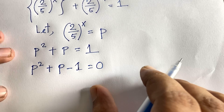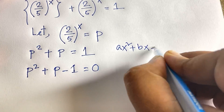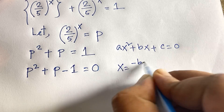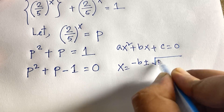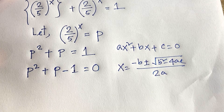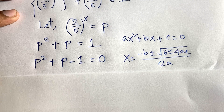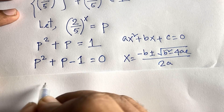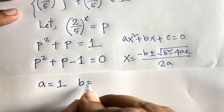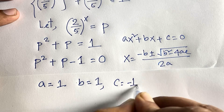We know the quadratic formula: x = (-b ± √(b² - 4ac)) / 2a. Applying this to our equation with a = 1, b = 1, and c = -1, we can find the values of p.